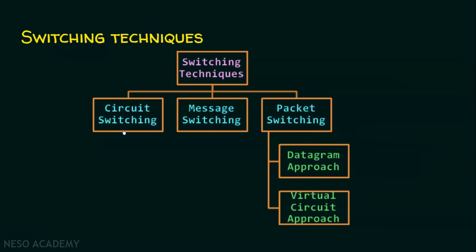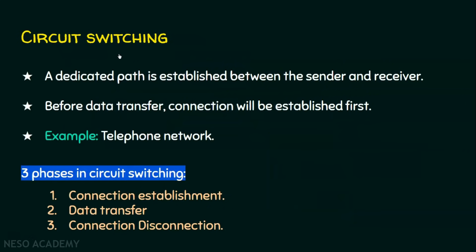In circuit switching, there is always a dedicated path established between the sender and the receiver. Before data transfer, the connection is established first — once the connection is made, then only data transfer begins. A well-known example of circuit switching is the telephone network.